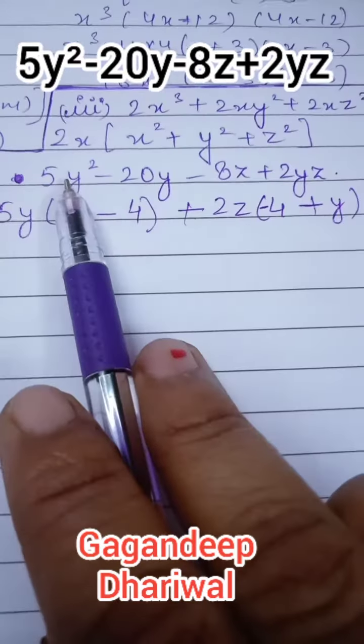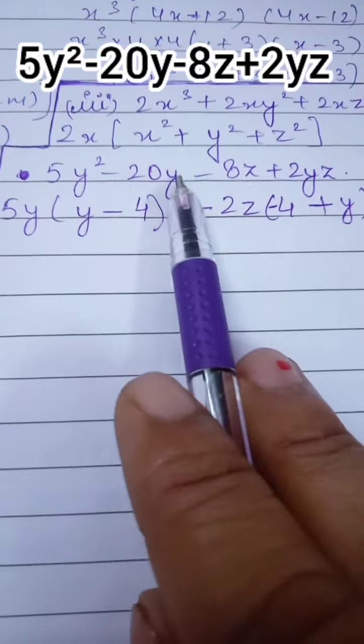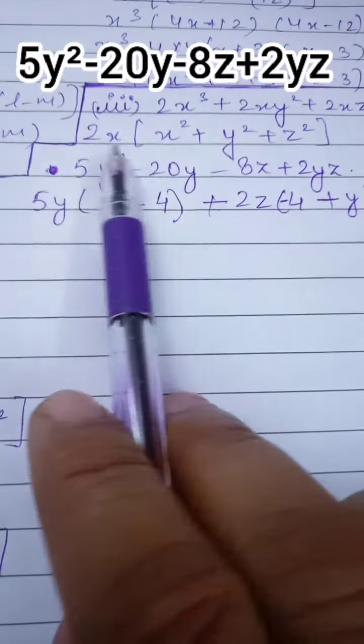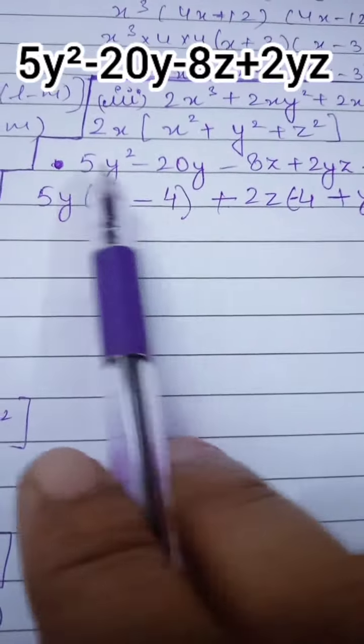Now see this question. This is the expression 5y² - 20y - 8z + 2yz. So what we have to do: firstly we have to take these two terms. 5y is common among these two terms, so we can take 5y as common.